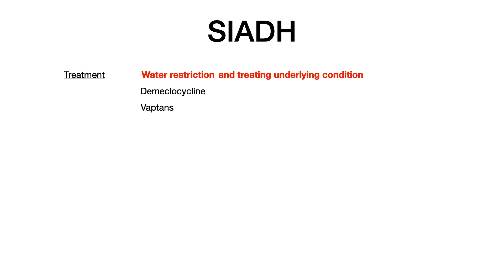However, if treating the underlying condition and water restriction do not work, you can give the patient either Vaptans or Demeclocycline. Vaptans are V2 or V1 receptor antagonists, and Demeclocycline induces diabetes insipidus by disrupting the secondary messaging cascade that occurs after vasopressin binds to the V2 receptor. So that's SIADH.